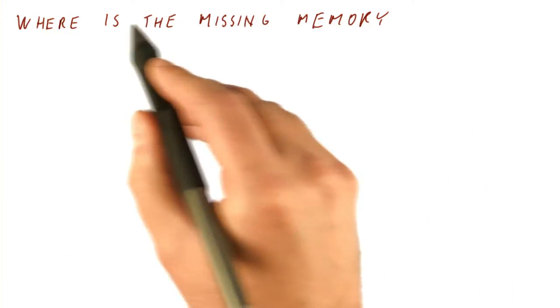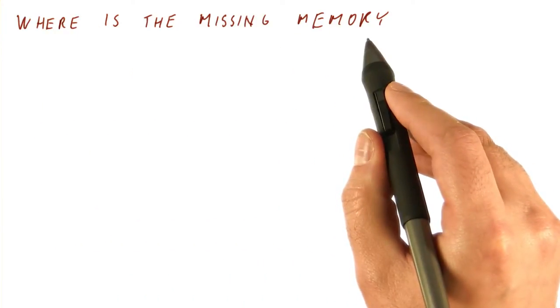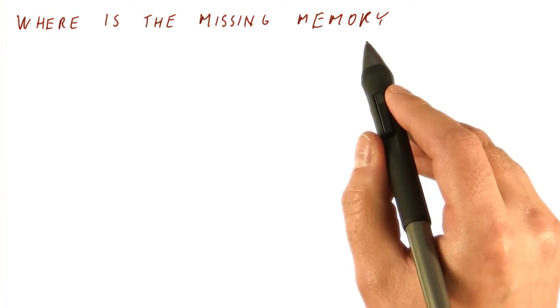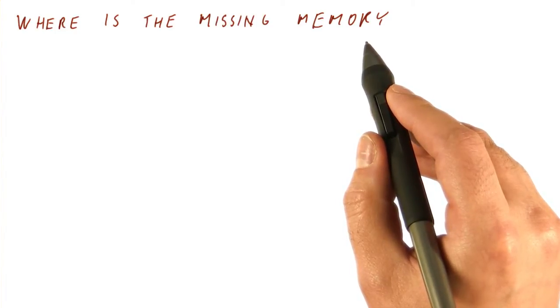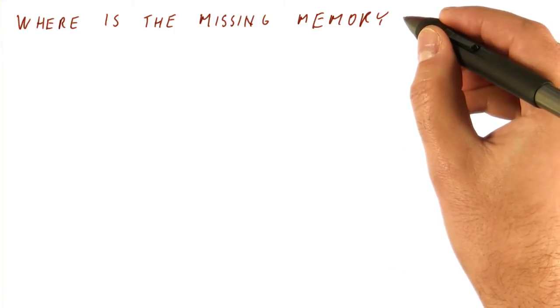So now that we know that each application sees a lot of memory, and there is much less physical memory than all the applications actually can access, the question is, where is the missing memory?